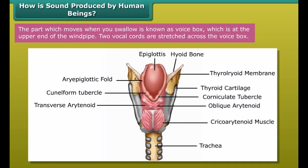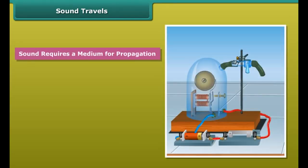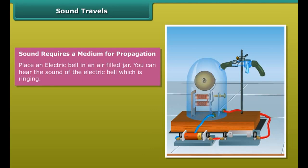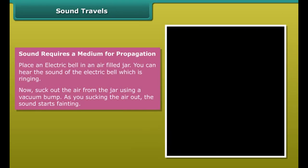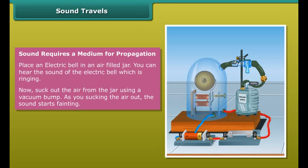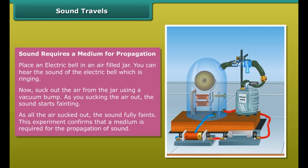How is sound produced by human beings? Sound is produced by the voice box or the larynx. The part which moves when you swallow is the voice box, located at the upper end of the windpipe. Two vocal cords are stretched across the voice box. When lungs force air through, vocal cords vibrate, producing sound. When the vocal cords are tight and thin, the type or quality of voice is different from when they are loose and thick.